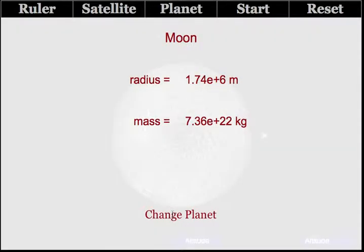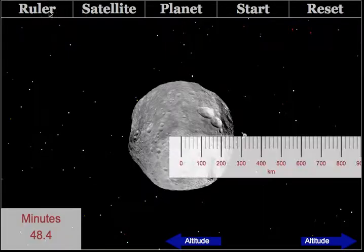Students should be aware that the ruler will change its scale based on the size of the central body. So when they are at Vesta, the ruler will now be in kilometers.